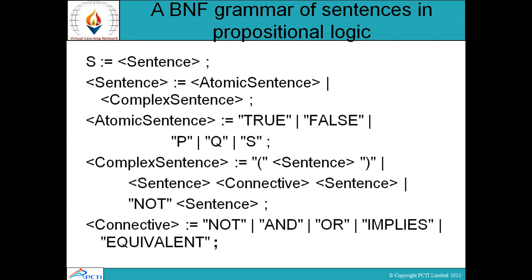Now let us discuss the truth values of atomic sentences. जो भी हमारे atomic sentences होते हैं उनकी कुछ truth values होती हैं — as we have already discussed, कोई भी statement की truth value या तो true होगी या false होगी। तो atomic sentence की भी या तो true value assign कर सकते हैं या false। Similarly complex sentences — जो हम connectives के help से create करते हैं — conjunction, disjunction, implication, और biconditional — इनकी help से हम complex sentences को create करते हैं।